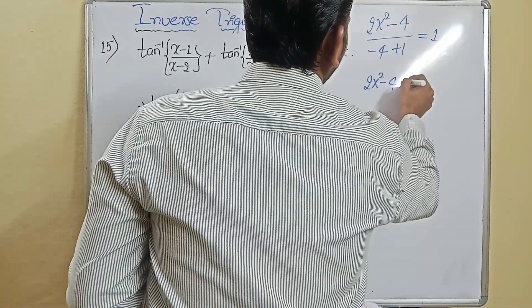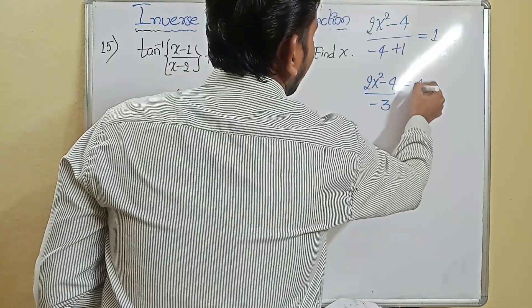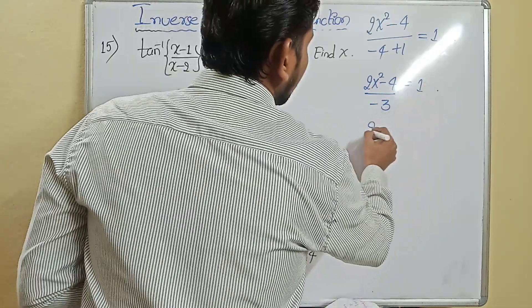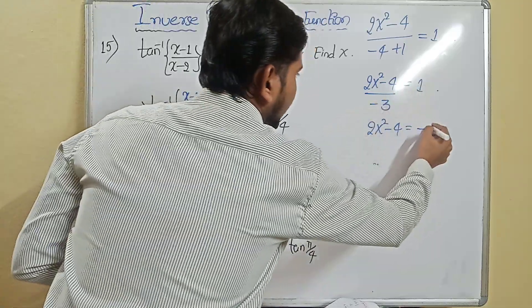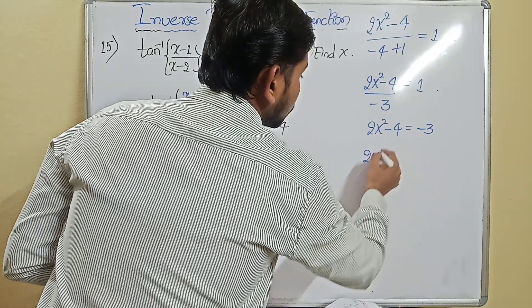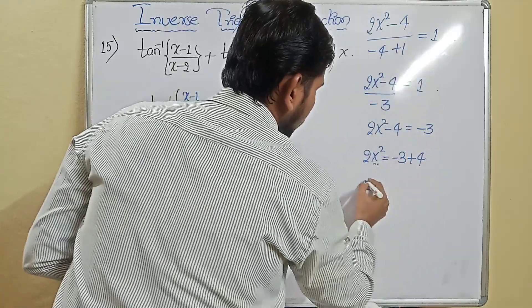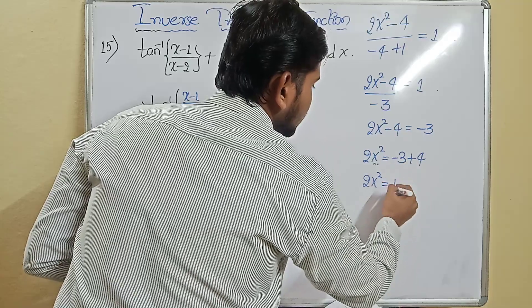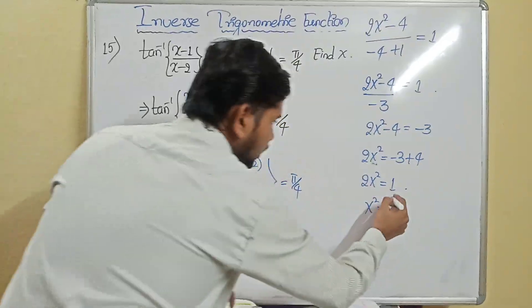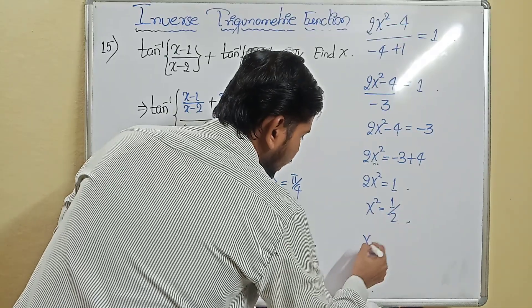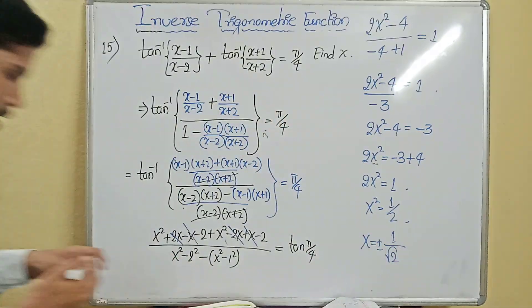So 2x²−4 = −3. Then 2x² = −3+4 = 1, giving x² = 1/2, therefore x = ±1/√2.